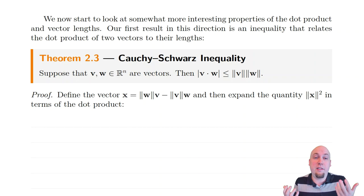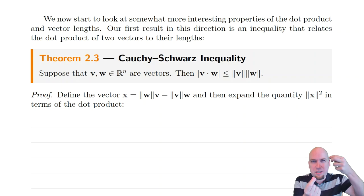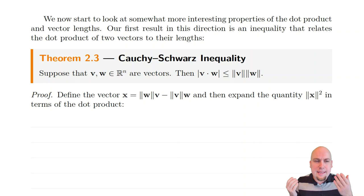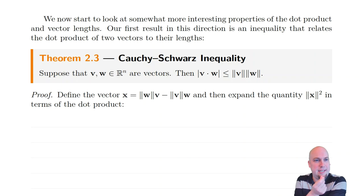Similarly, we saw a theorem that said if you want to compute the length of a scalar times a vector, you could equivalently compute the length of that vector and then multiply by the absolute value of that scalar. In other words, you can pull scalars out of vector lengths as long as you throw an absolute value around it. That wasn't surprising because scalar multiplication just stretches a vector, or reflects it if the scalar is negative.